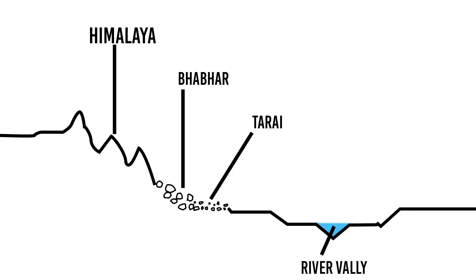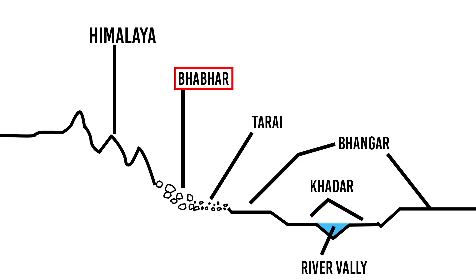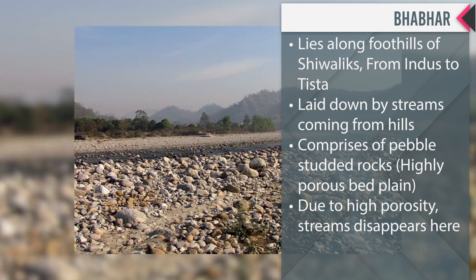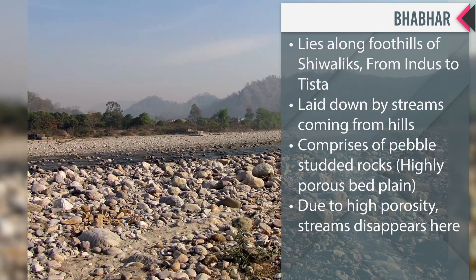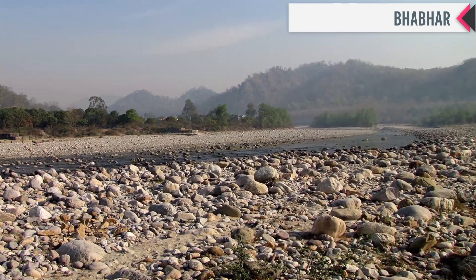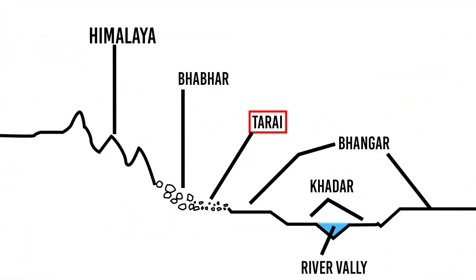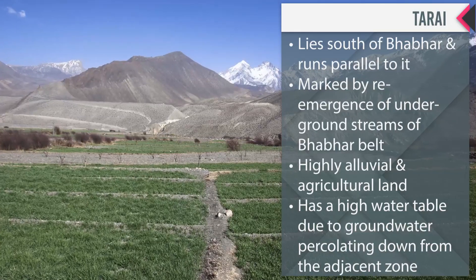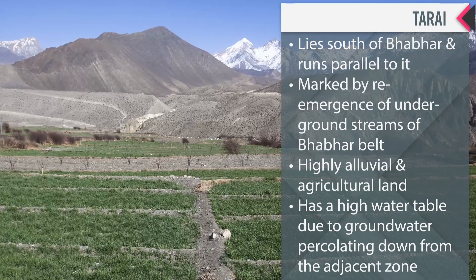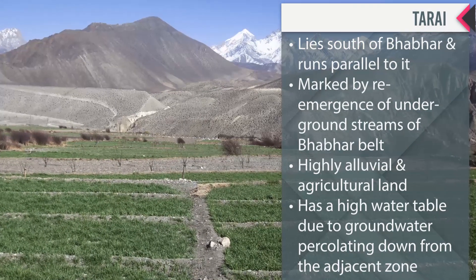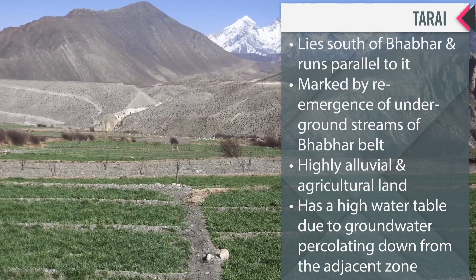The four major subdivisions of the Northern Plains are Bhabar, Tarai, Khadar, and Bangar. The Bhabar lies along the foothills of the Shivalik from the Indus to Tista. It is laid down by streams from the hills and comprises pebble-studded, highly porous, wet plains. Due to high porosity, streams disappear here. Tarai lies south of Bhabar, running parallel to it, marked by the re-emergence of underground streams from the Bhabar belt. It is highly alluvial, agricultural land with a high water table.